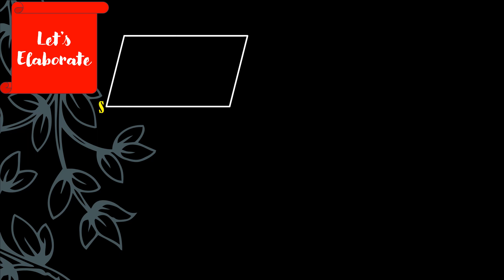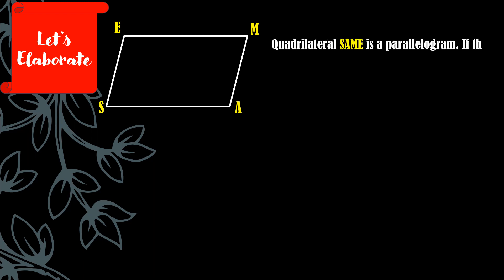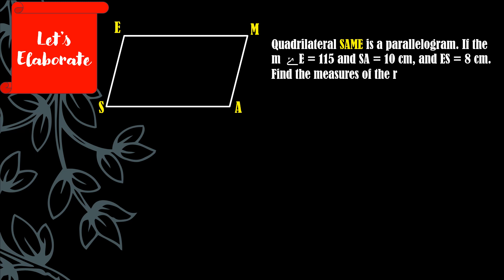Now let's elaborate with an example using quadrilateral SAME, which is a parallelogram. The measure of angle E is equal to 115°, the length of segment SA is 10 cm, and the length of segment ES is 8 cm. We need to find the remaining angles and the lengths of segments MA and EM.